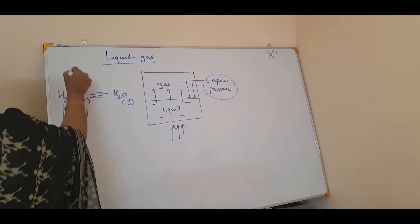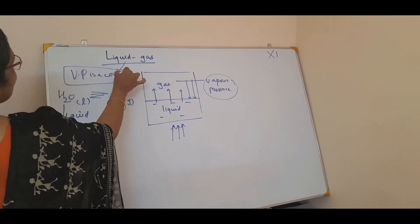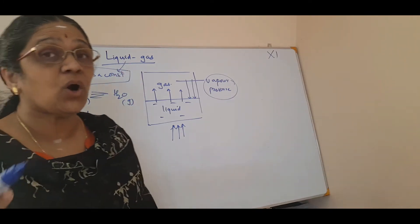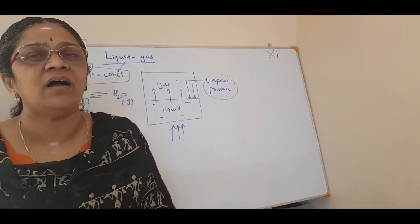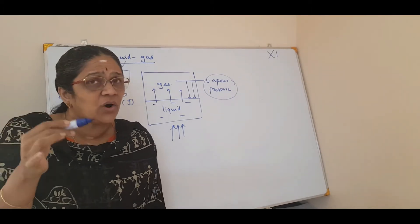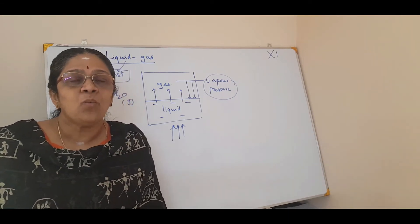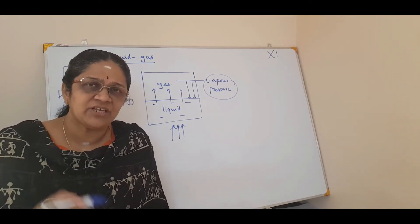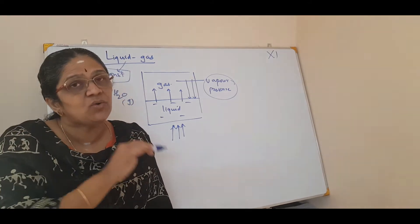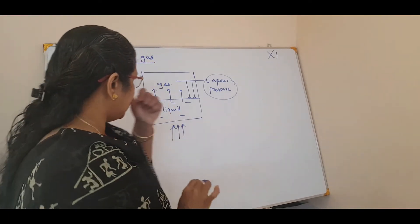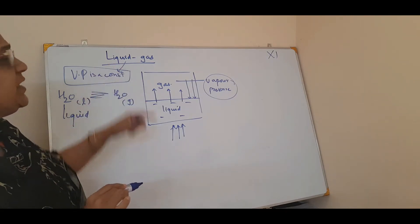In liquid-gas equilibrium, the vapor pressure is constant. In solid-liquid equilibrium, it was the temperature that was constant. For every equilibrium, one measurable quantity — such as temperature, pressure, or solubility — is kept constant. In liquid-gas equilibrium, the rate of evaporation equals the rate of condensation: the speed at which liquid molecules convert to gas equals the speed at which gaseous molecules condense back to liquid.